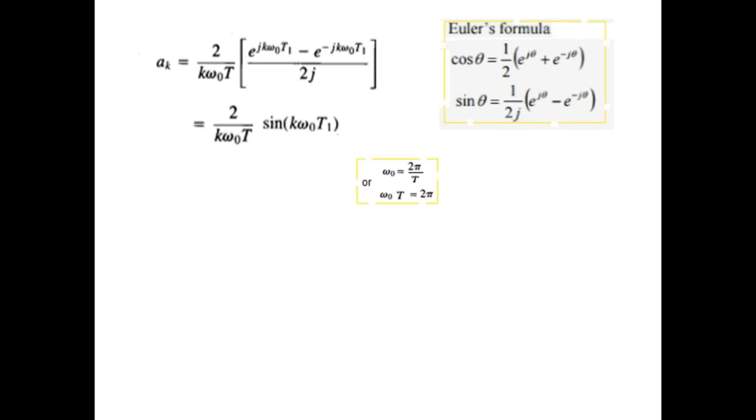We got this value of aₖ. Now we will use this formula for sine to convert it into sinusoidal form. So aₖ now becomes (2/kω₀T)sin(kω₀t1). We know that ω₀ = 2π/T, therefore ω₀t1...